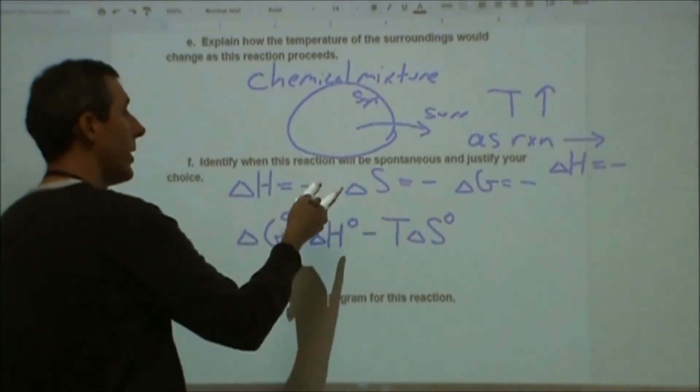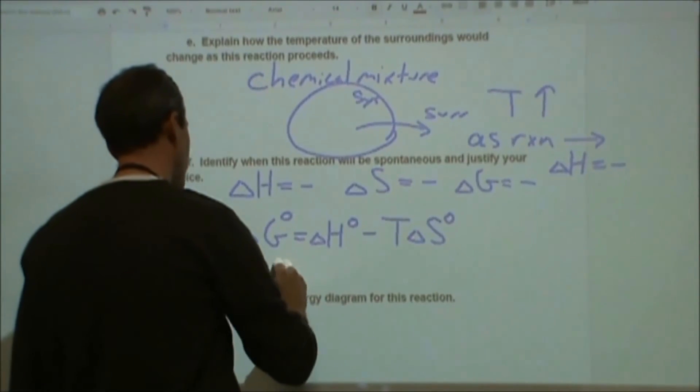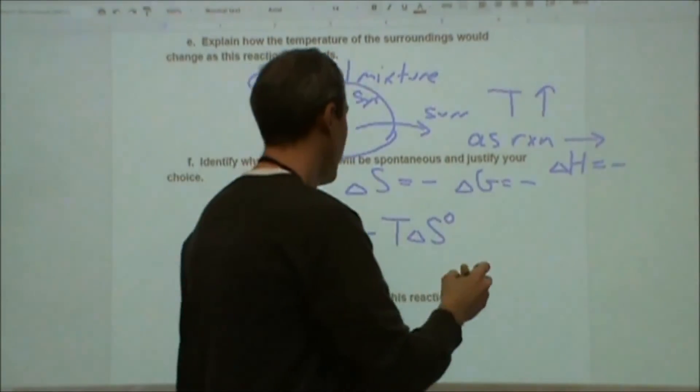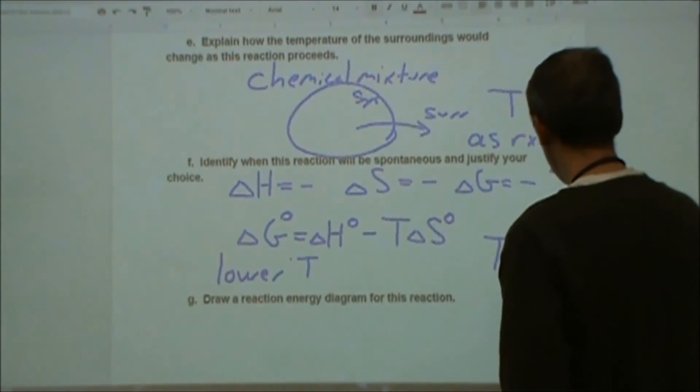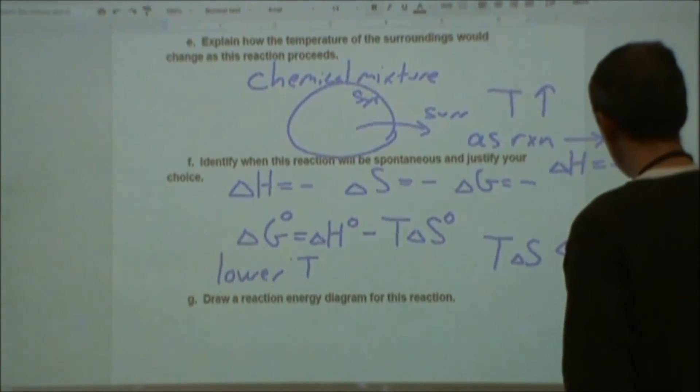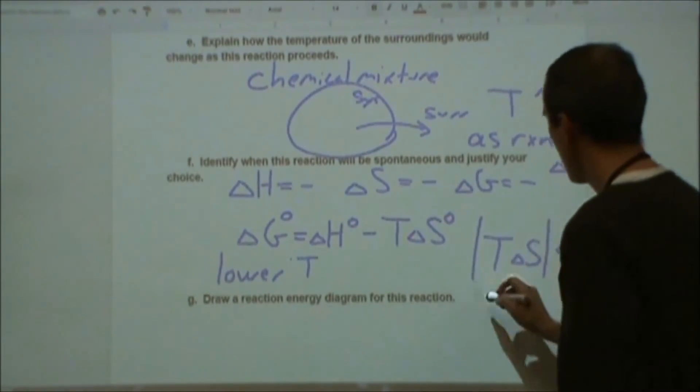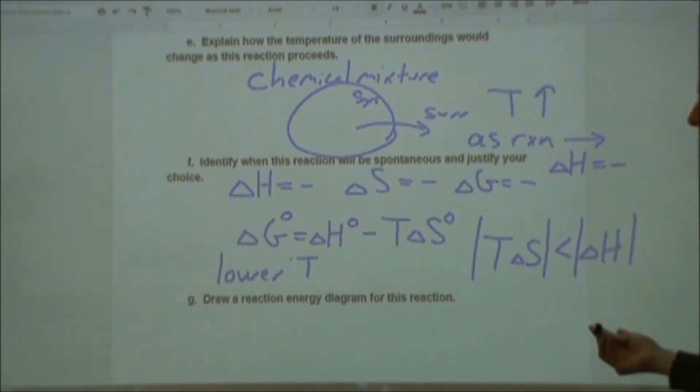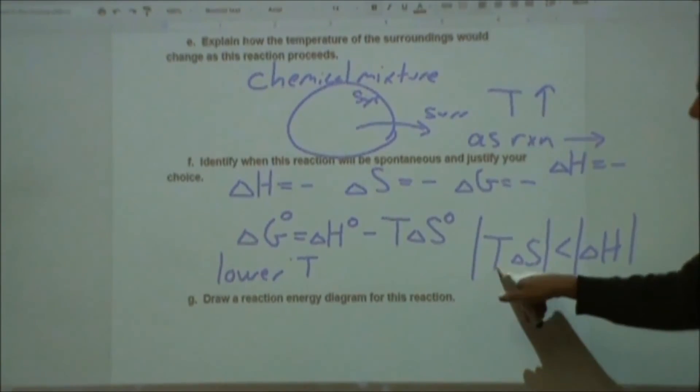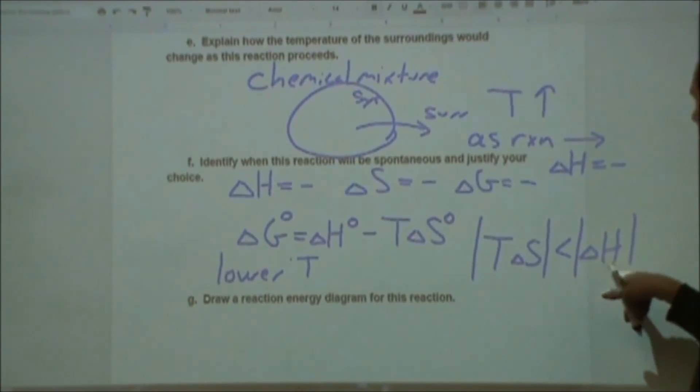So when this reaction will be spontaneous, this will be at lower temperatures. And specifically, temperatures where T delta S is less than delta H in terms of magnitude alone, ignoring the signs. When the enthalpy change is bigger than this quantity, that's when that reaction is going to be spontaneous. The minute that the temperature times the entropy becomes larger in amount, regardless of direction, than the enthalpy change, that's when we're going to see this go from being spontaneous to not being spontaneous.